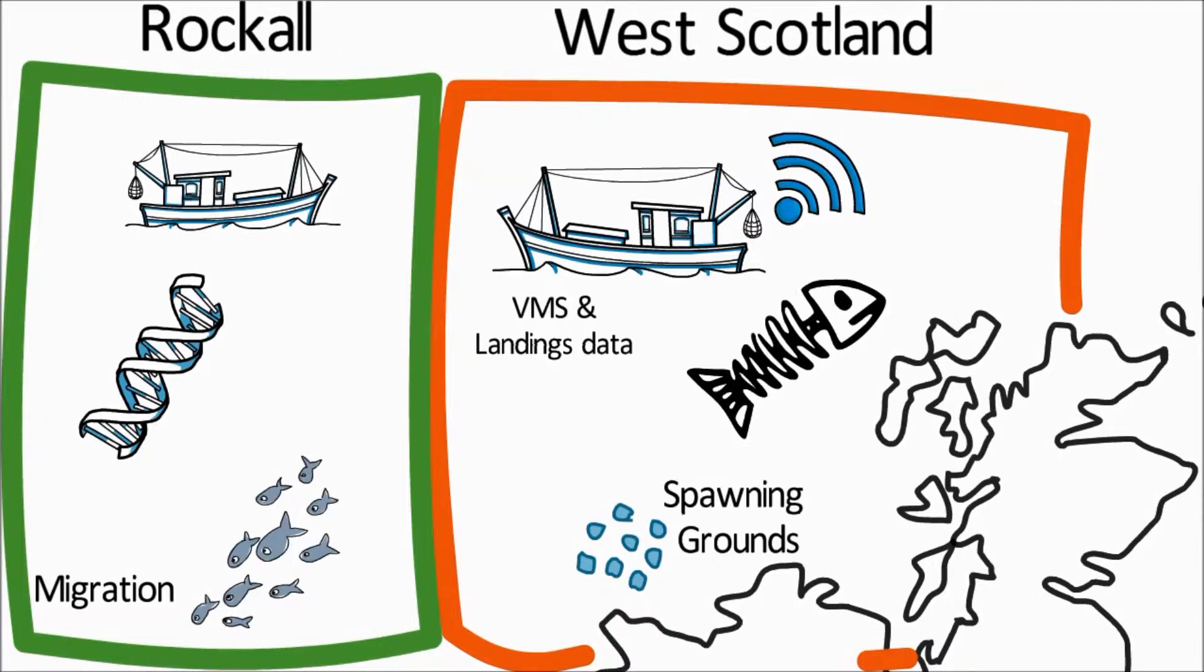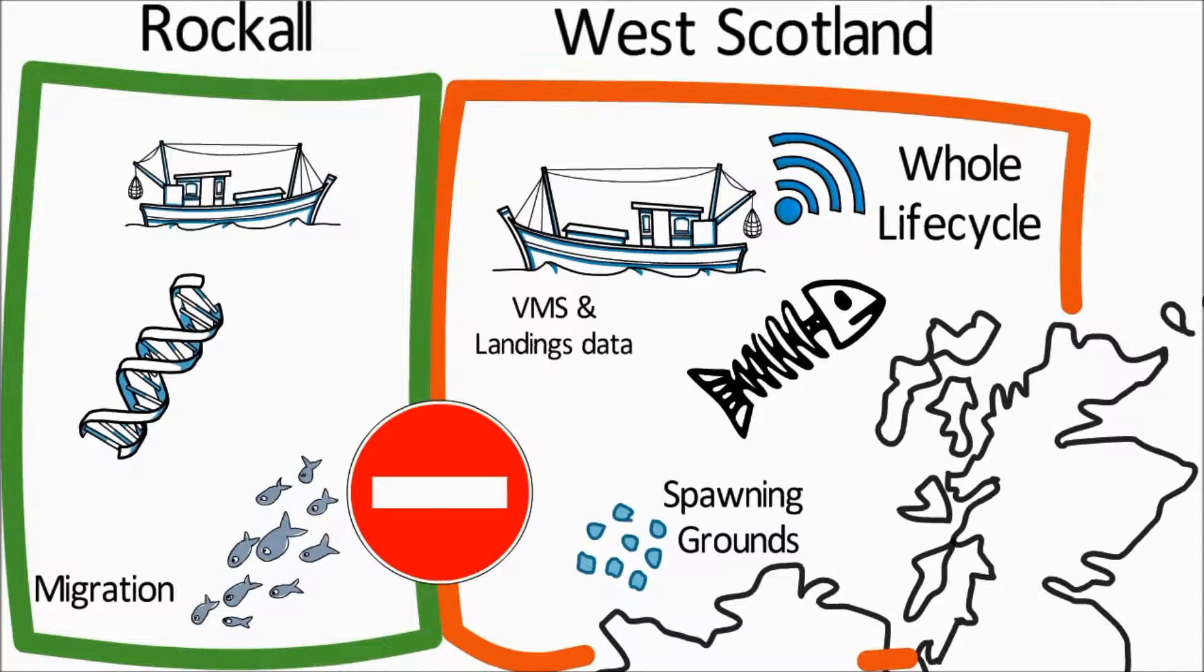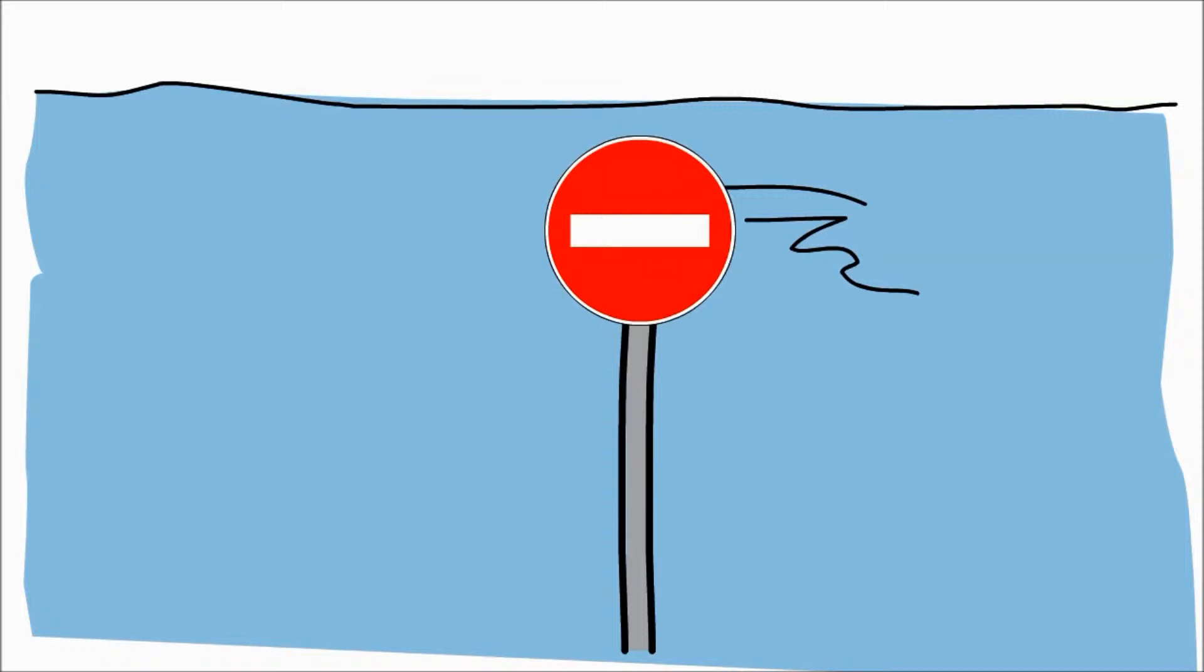Stock assessments then assume that fish stay in a population for their whole life cycle and don't migrate from one stock to another. In reality, this is not always true, as fish don't stick to boundaries on maps, but it's often a good enough approximation.